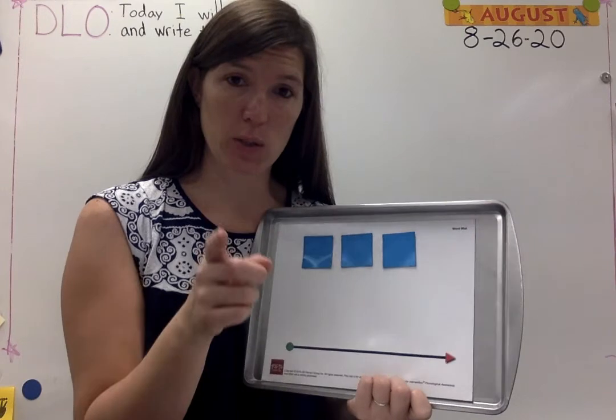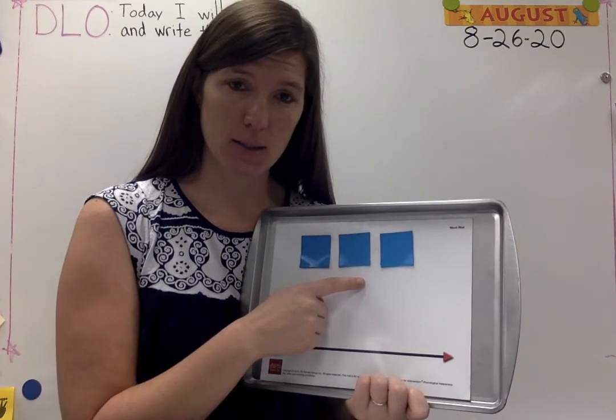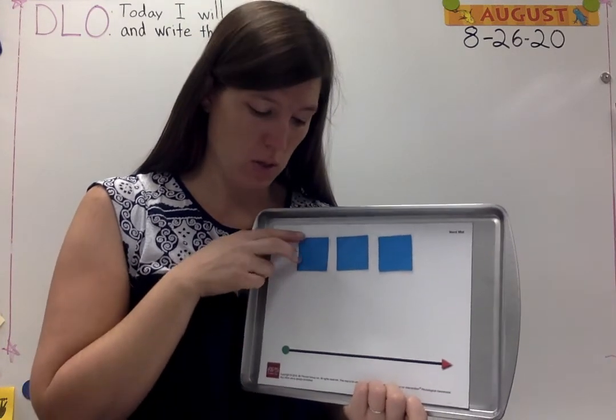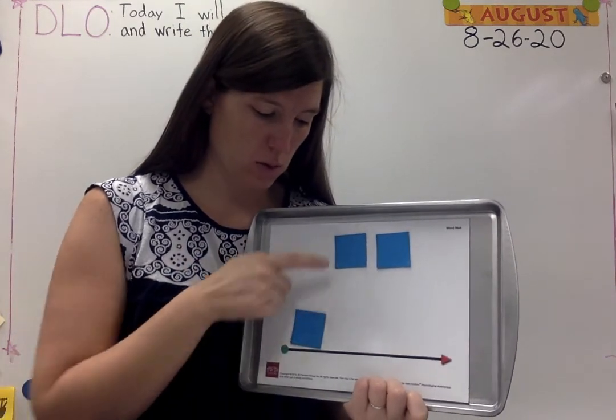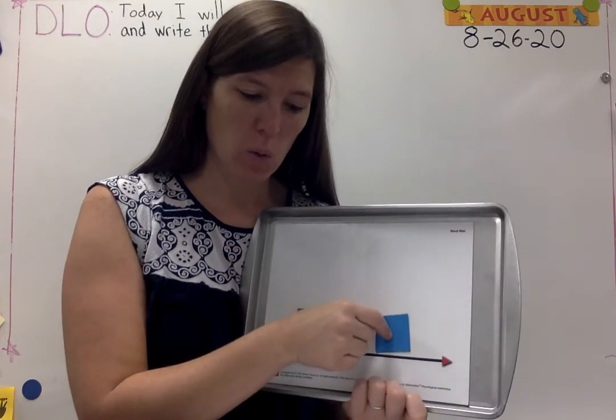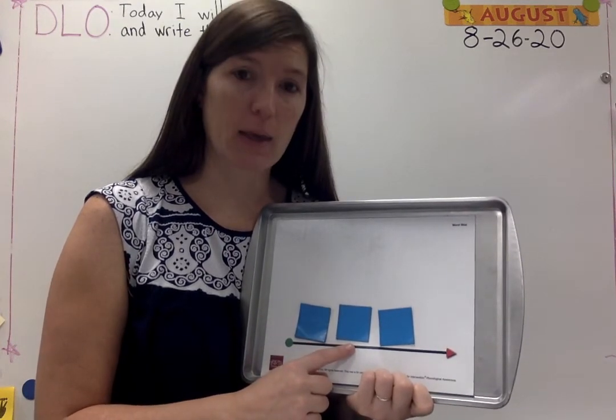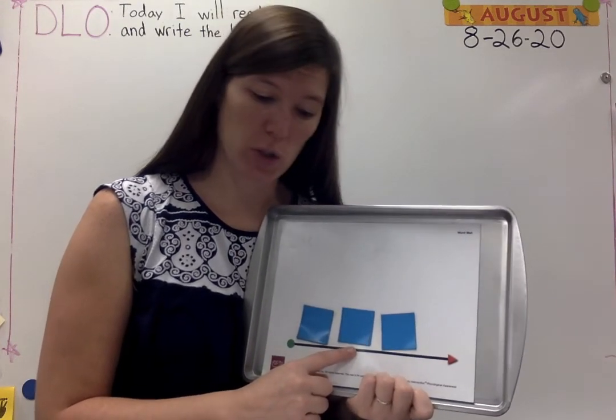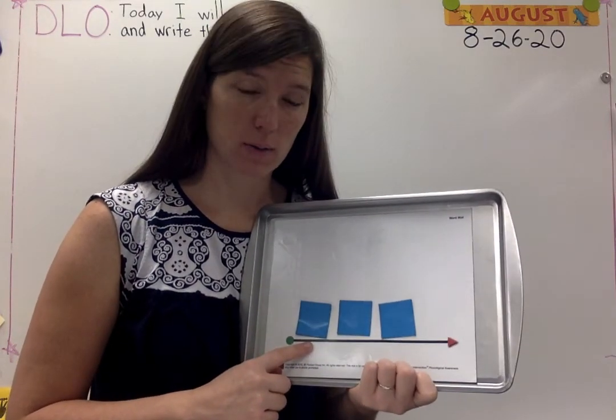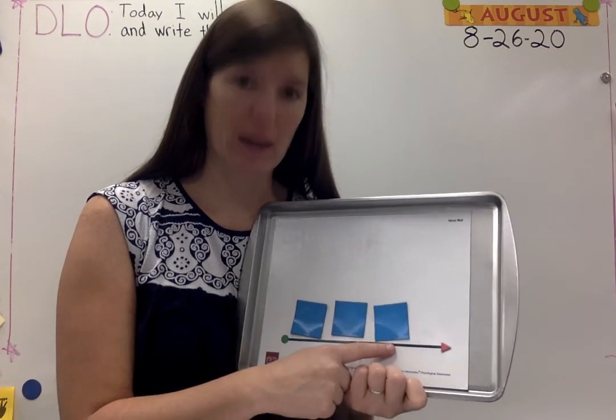Now I want you to say them. Dog. Cat. Kite. Say them with me as I pull them down. Dog. Cat. Kite. Which is in the middle? Cat. Which is at the beginning? Dog. Which is at the end? Kite.